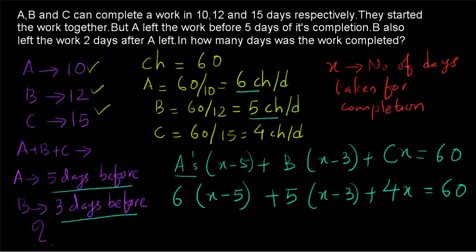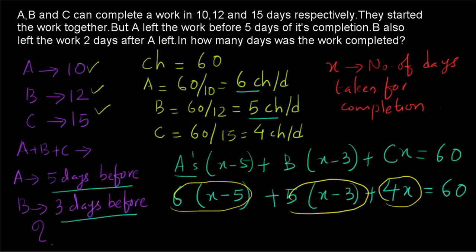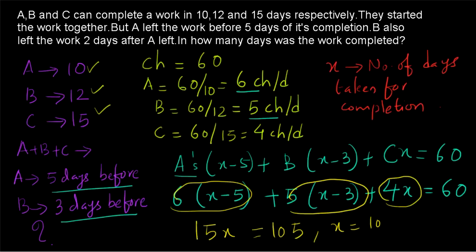The chocolates consumed by A plus the chocolates consumed by B plus the chocolates consumed by C will together give us the total number of chocolates, which is equal to 60. We are having 6X plus 5X plus 4X which is equal to 15X. And we are having minus 30 and minus 15, so minus 30 minus 15 is equal to minus 45. Taking to the other side, we will be getting 15X equals 60 plus 45, which is equal to 105. And from that we will be getting X is equal to 105 by 15, which is equal to 7 days. So 7 days are taken for completion.